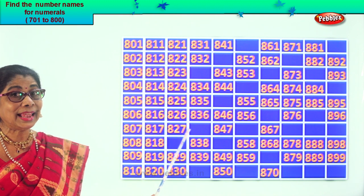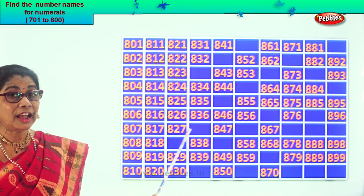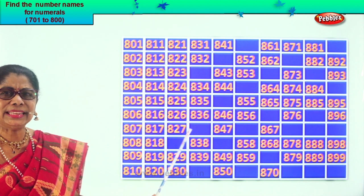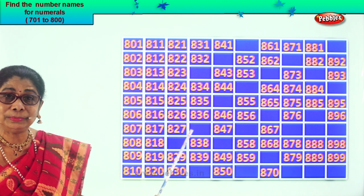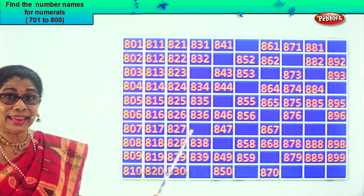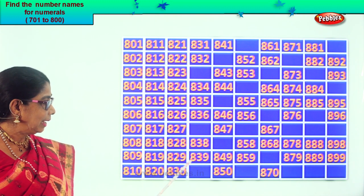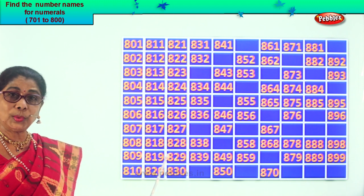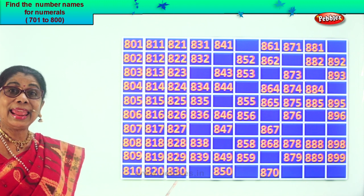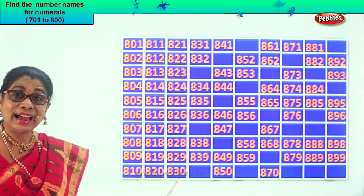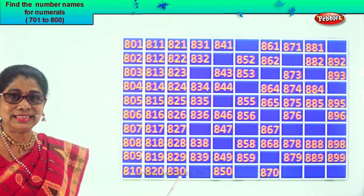After 7 comes 8 — after 827 comes 828. Then 829, 830.